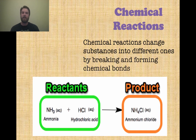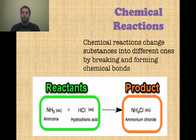Chemical reactions change substances from one thing to something different. The definition of a chemical reaction is when there is a new substance created. Outlined in green down there is what you start with in a chemical reaction — those are known as the reactants. In this case, it's ammonia and hydrochloric acid. And after they react with each other, they produce products. So reactants are the before, products are the after in a chemical reaction.